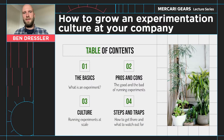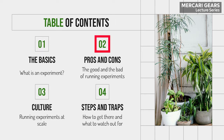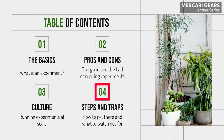I want to go about this in four steps. I want to talk a little bit about the basics of what an experiment actually is, then about the pros and cons of running experimentation, about the culture — what that is and how you ramp that up, how it should look. And lastly, the different steps and traps, so the pitfalls you should avoid and what you can do to speed the process up.